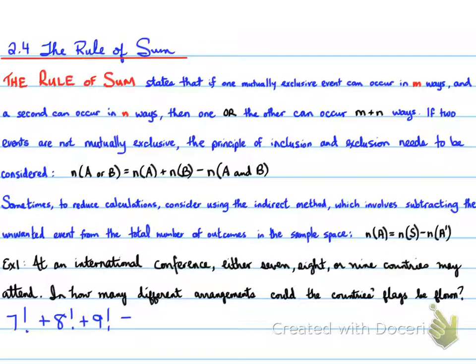We have the number of events of A plus the number of events of B, and we add them together. When we calculate 7! + 8! + 9!, we have 40,408,240 different ways we could fly the flags. Remember, it's seven, eight, or nine, and none of them have a repeat of each other. For example, if seven countries attend, we will not have eight countries. So we don't have to worry about the exclusion part. We're actually doing an example where it's mutually exclusive, so it's M plus N ways.